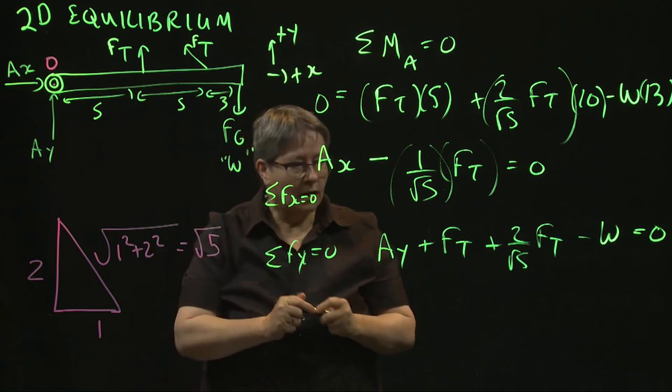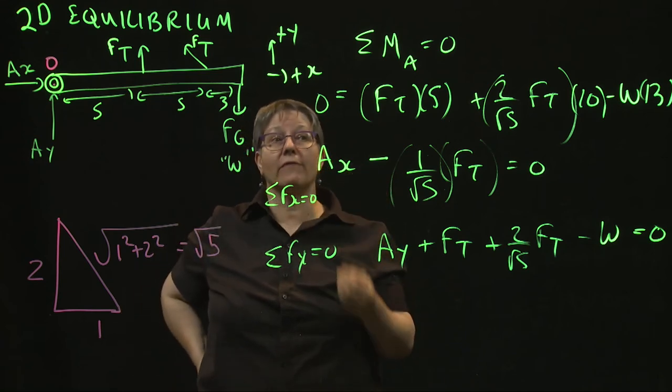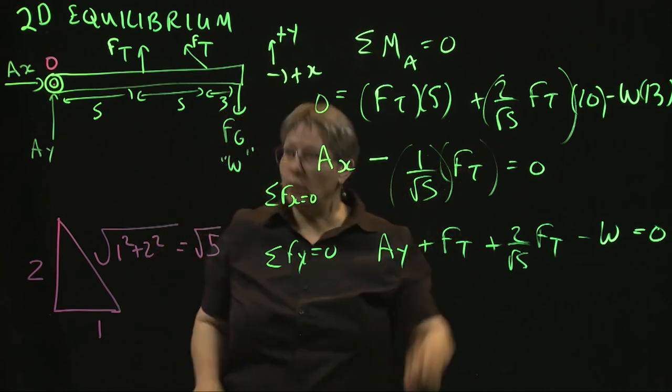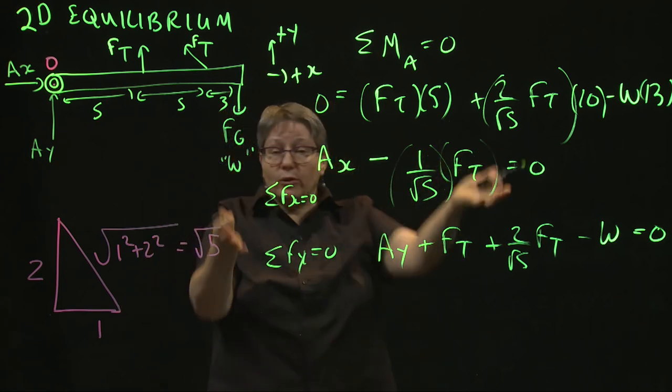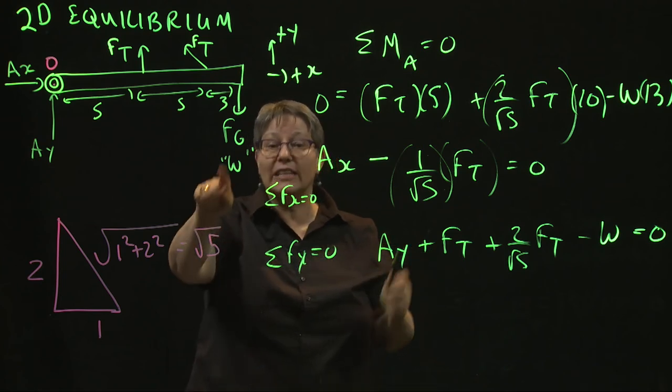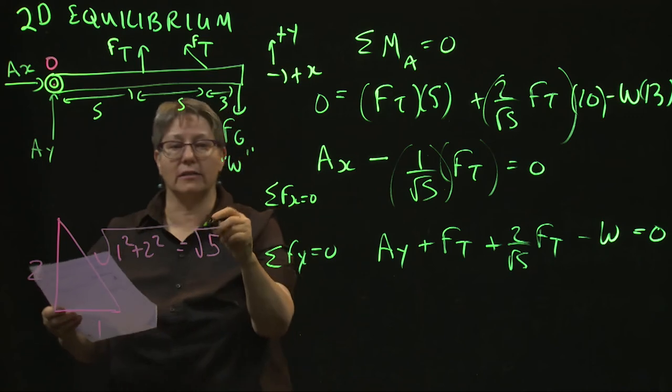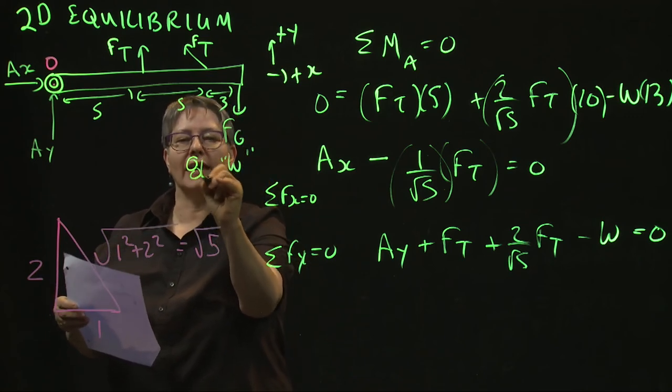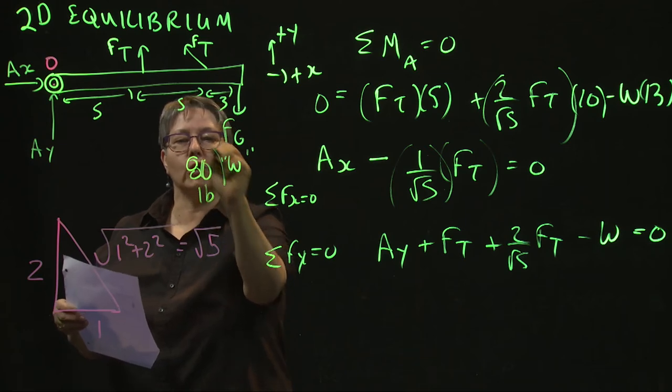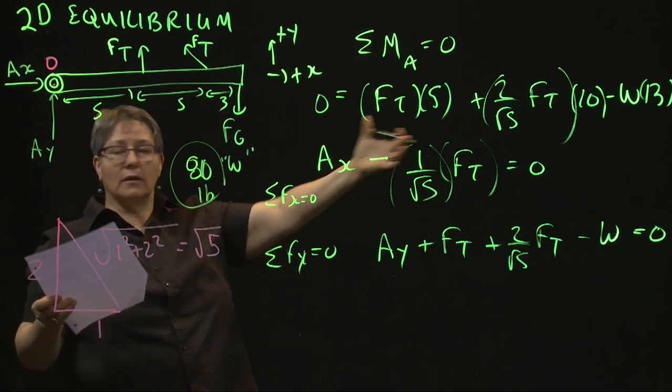So there we have it. We have three equations, and we have three unknowns. Now, and I think I forgot to write down here, so I'll add this. You can't solve this as is, you need to know what the number is. And I neglected to write that down. So if you start off by knowing, if I give you that your weight force is 80 pounds, well then, out it comes.